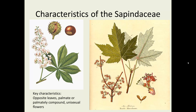Characteristics: opposite leaves in particular, and generally compound leaves, palmate or pinnate. On the left you can see a buckeye, which would be palmately compound, and on the right is a maple, which is just palmate, and you can see in particular those opposite leaves.